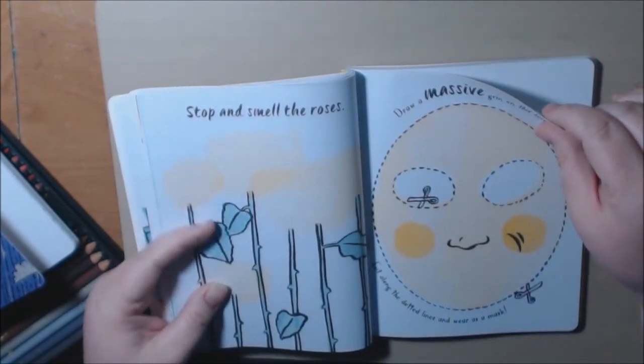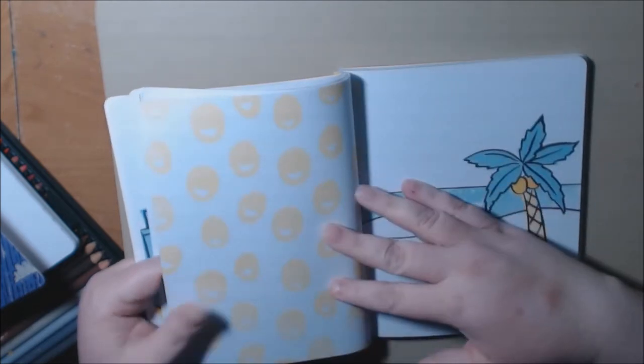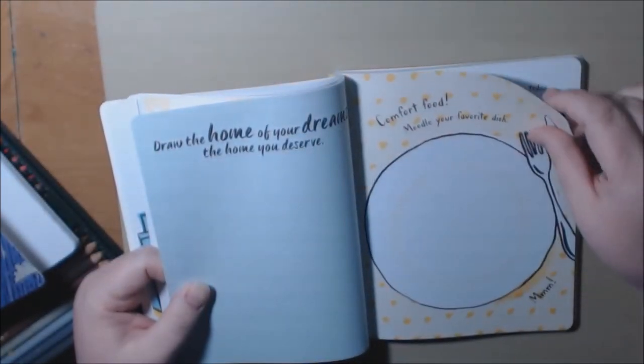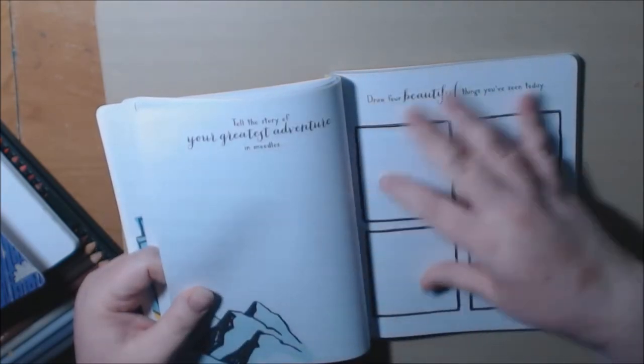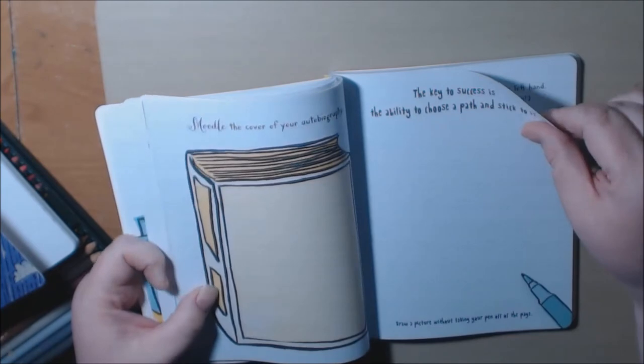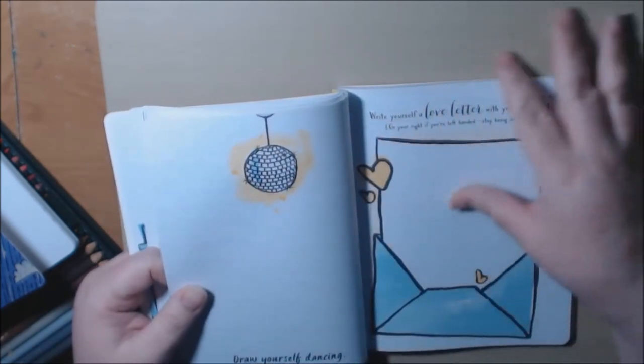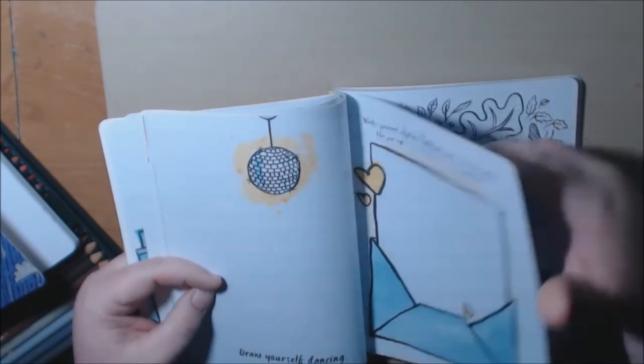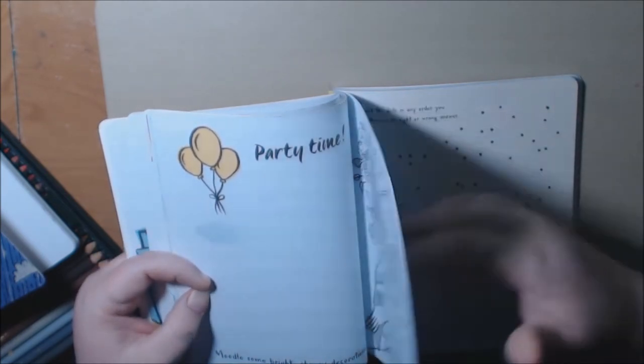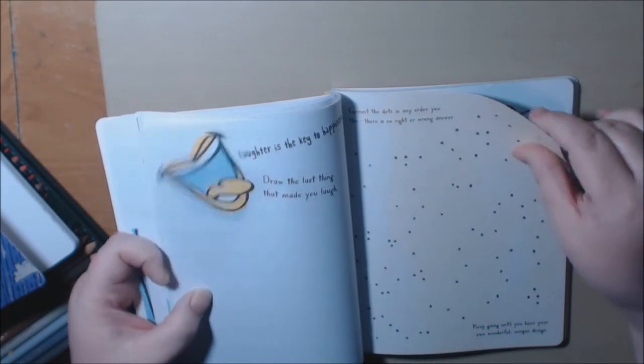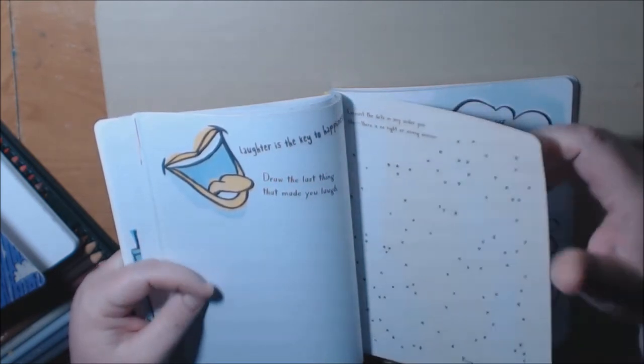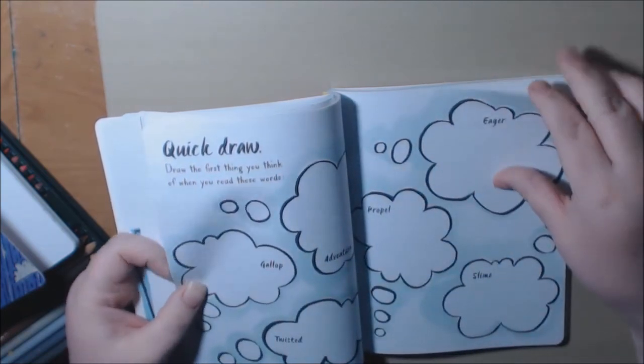Just I can smell the roses if I draw the roses on it. Draw your favorite dish. Draw yourself dancing. Write yourself a love letter with your left hand. Color in the picture. Connect the dots in any order you like. There's no right answer.